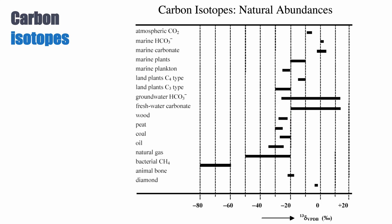Bacterial methane is probably the lightest product, plotting at around minus 60 to minus 80 per mil — very depleted compared to the volcanic degassing carbon source. That's because of the bacterial processes that lead to the formation of that methane.